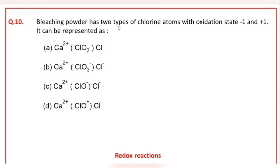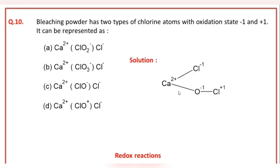Bleaching powder has two types of chlorine atoms with oxidation states minus 1 and plus 1. It can be represented as: C is the correct answer option.